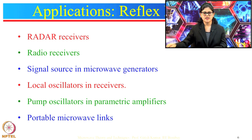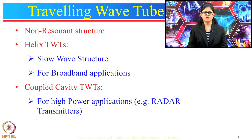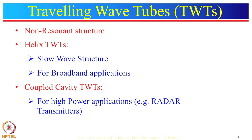Let us move on to the next microwave tube: the travelling wave tube. These microwave tubes are non-resonant structures and they are of two types. The first is helix travelling wave tubes, which are slow wave structures used for broadband applications. The second is coupled cavity travelling wave tubes, used for high power applications such as radar transmitters. I will discuss these two structures one by one, but before looking into the helix travelling wave tube, let us see what slow wave structures are.